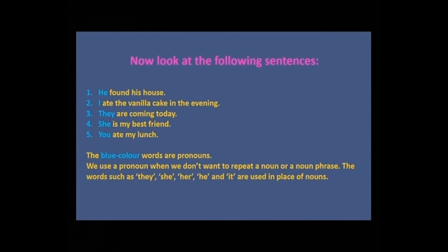Now look at the following sentences. First: He found his house. Second: I ate the vanilla cake in the evening. Third: They are coming today. Fourth: She is my best friend. Fifth: You ate my lunch. Look at the blue color words: He, I, They, She, You — these words are pronouns. We use a pronoun when we don't want to repeat a noun or noun phrase. Words such as they, she, her, he, and it are used in place of nouns.